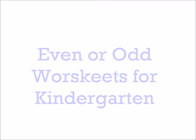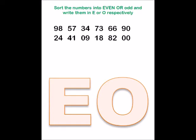The first one is sorting into even or odd. I've given a set of numbers here, and below those numbers I have given letters E and O in a big size so that the child can sort the given numbers into even and odd and write in E if it is even and write inside O if it is odd.